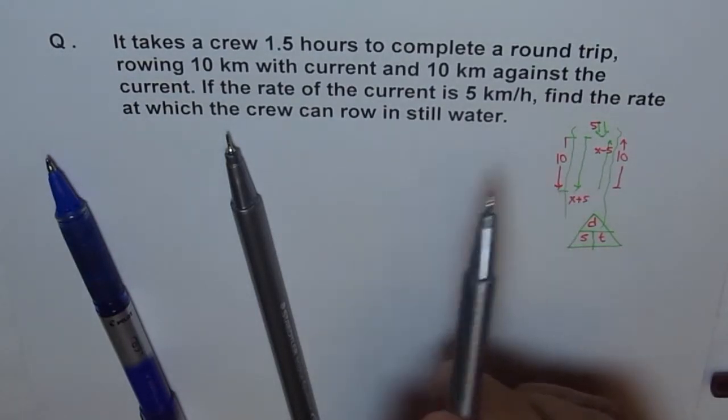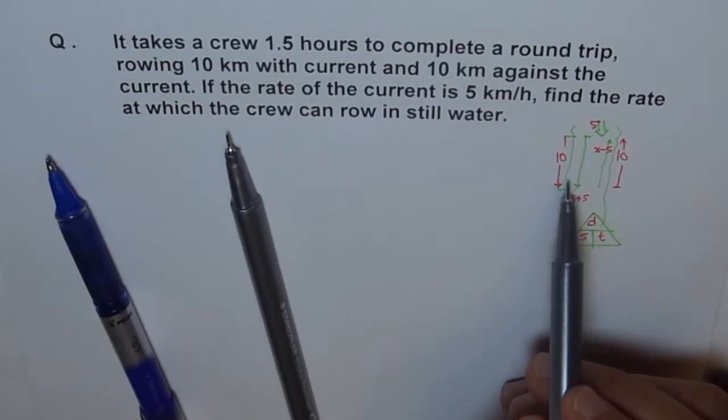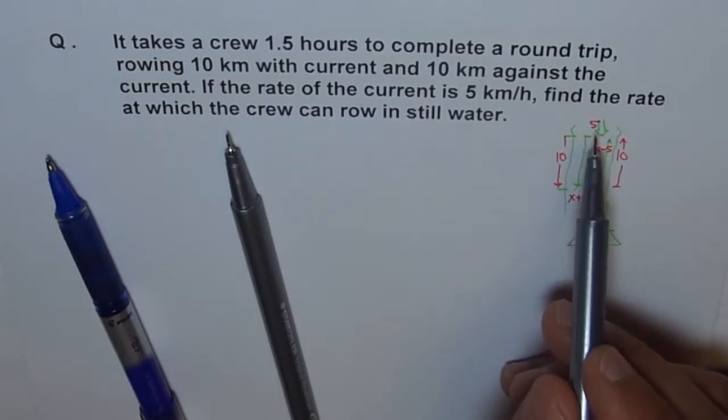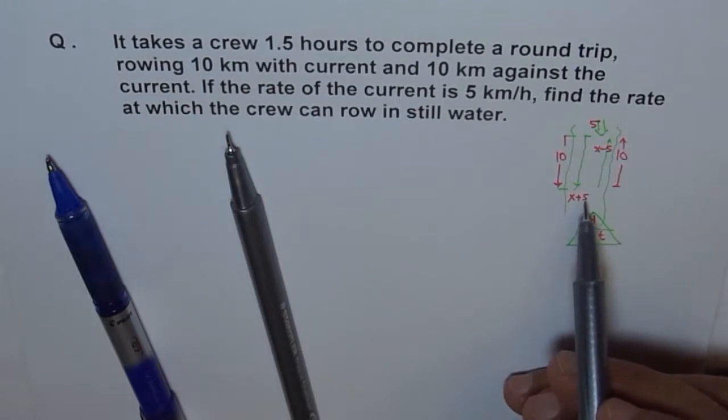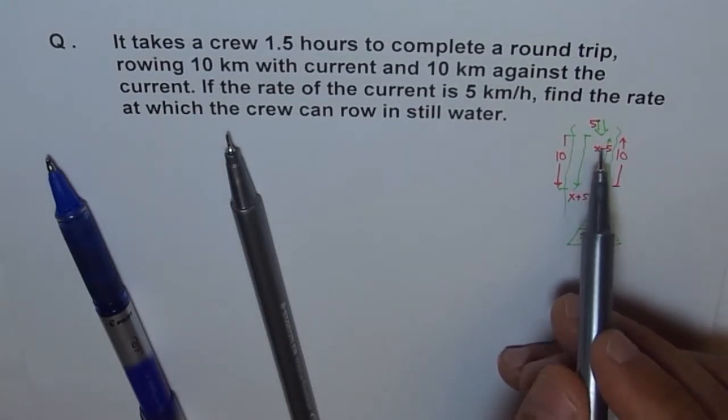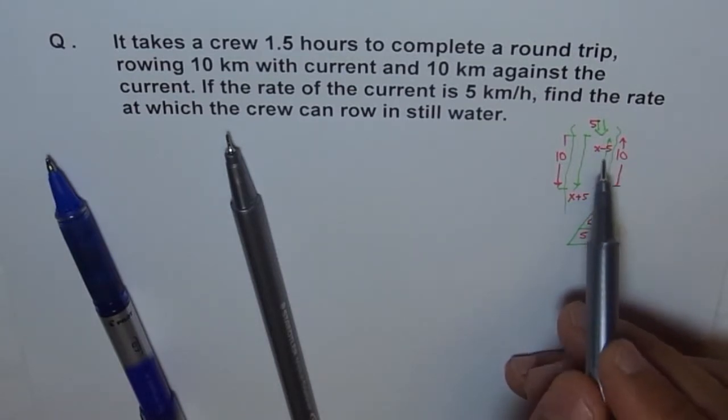Second, just to make things very clear. So, when they are going with the water, with the current, and you know the current is 5 kilometers per hour. So, when you go with the current, then the speed, the relative speed we sometimes say is X plus 5. And the net speed you can say.